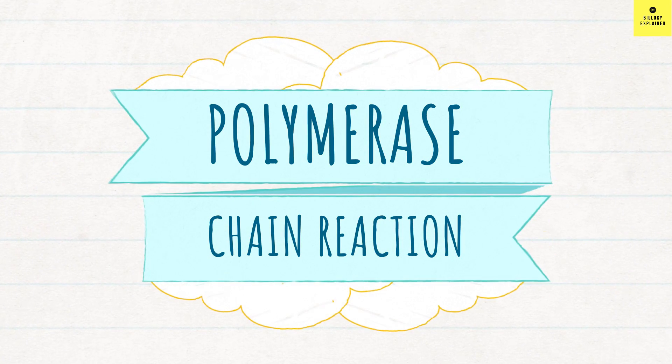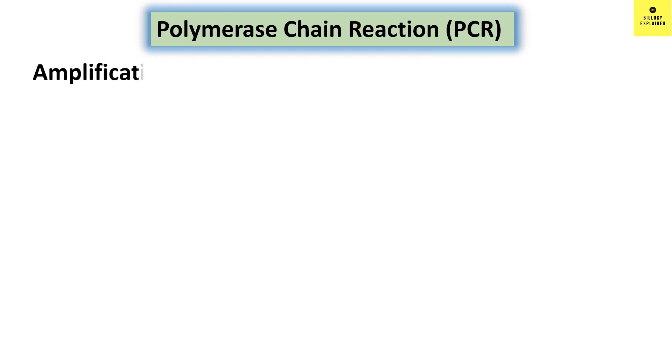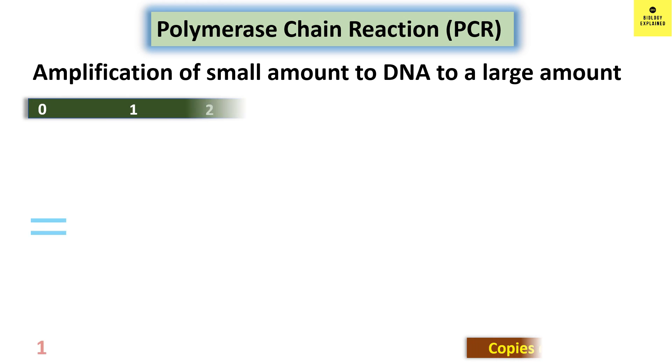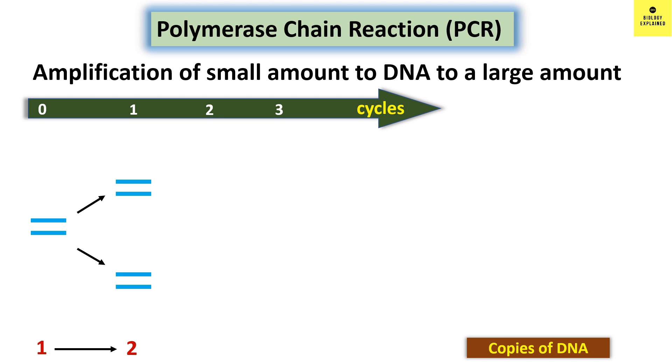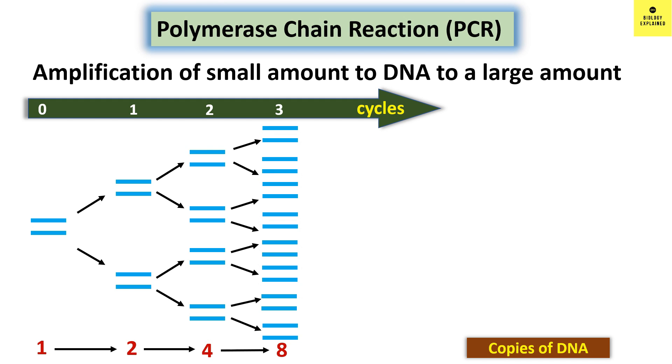PCR, that is polymerase chain reaction, is a process of amplification of a very small amount of DNA. If we have one copy of DNA, then with the help of PCR, in the next cycle, we will have two copies of DNA and in the next cycle, we will have four copies, then eight copies, 16, 32 and so on.